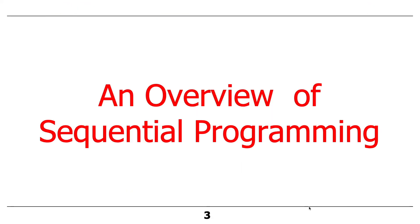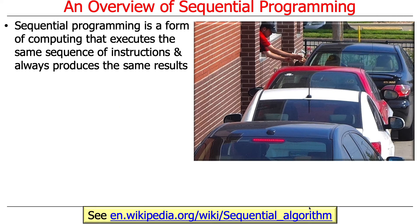What is concurrency? Before we can talk about concurrency, it probably makes sense to take a step back and talk a bit about sequential programming. Sequential programming is a form of computing where the instructions are executed in a particular sequence, and you always get the same results because they always execute in the same way.